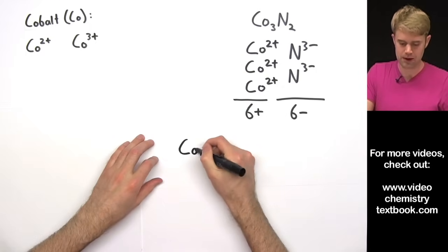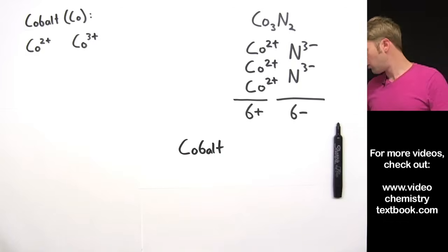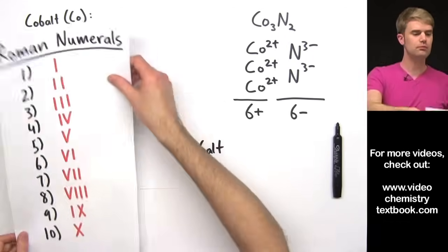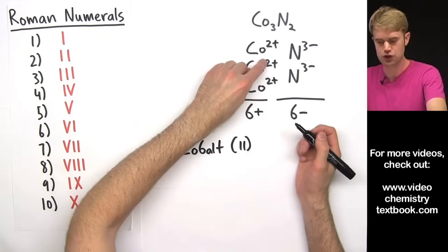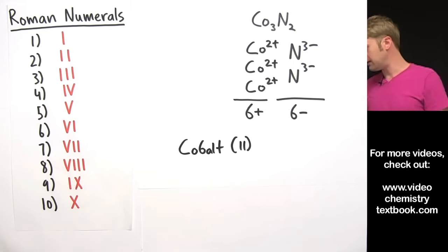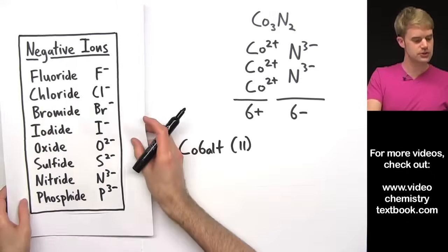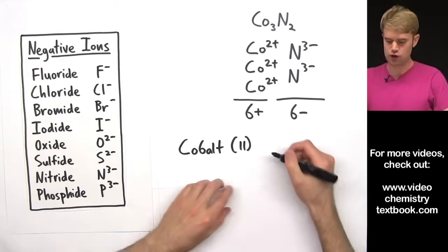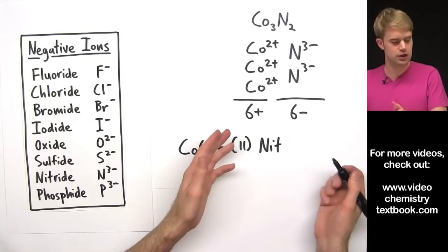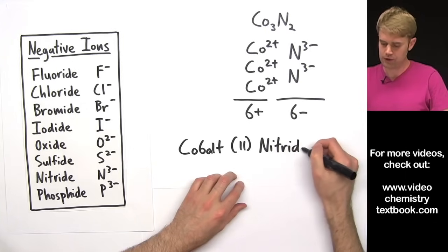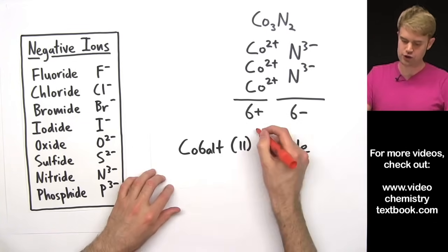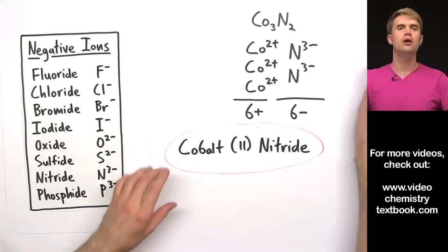So for naming it, we'll call it cobalt, Roman numerals here, parentheses(II) because that's its charge here. And finally, N3-, we call that nitride. The neutral element is called nitrogen and then we add that -ide, cobalt(II) nitride. Let's do a couple more.